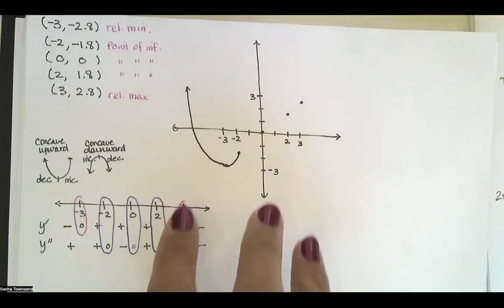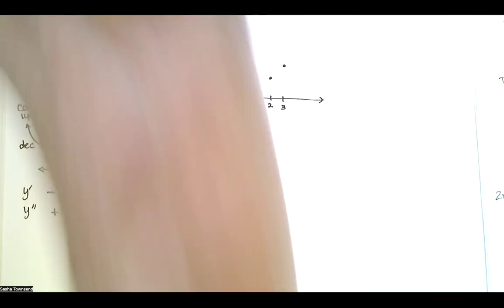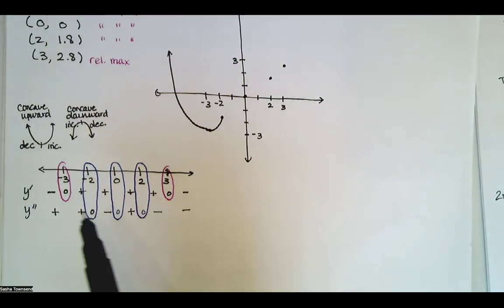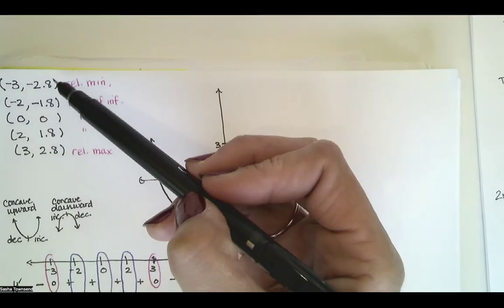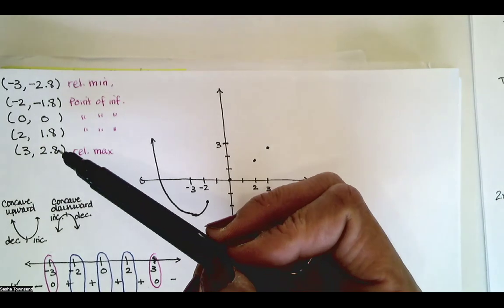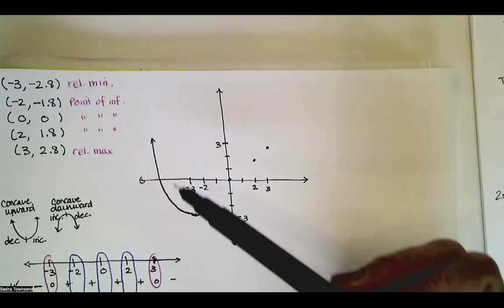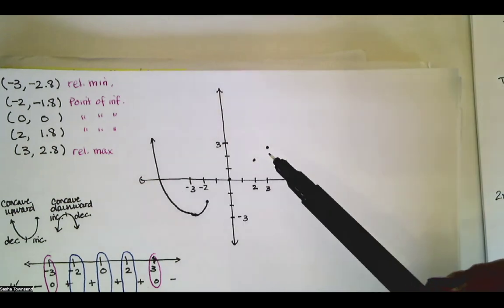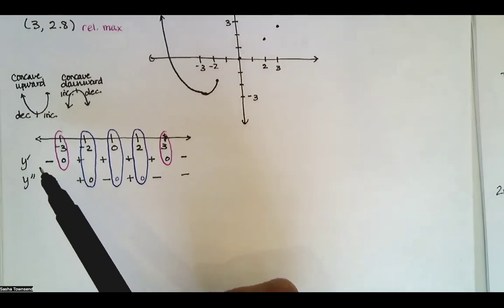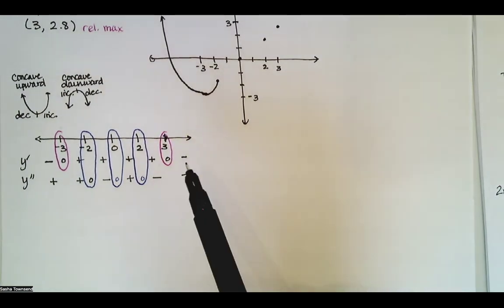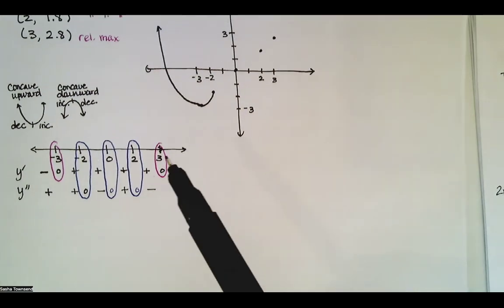So I was cut off while finishing this discussion, so let's finish it. We're right here and we've done all the calculations. We know that this point corresponds to a relative min, this point corresponds to a relative max, and these three points are points of inflection. At the end of the last video, I plotted those five points and made a sign chart with signs of y prime and y double prime and all the intervals of interest. So we're just trying to graph the function now.